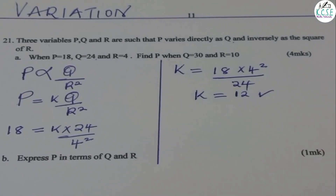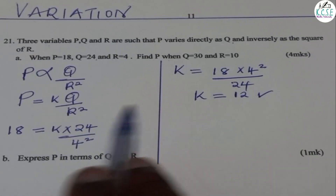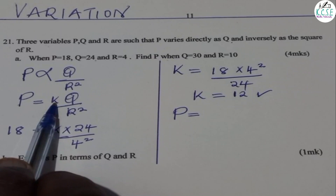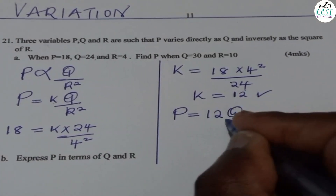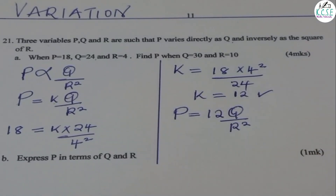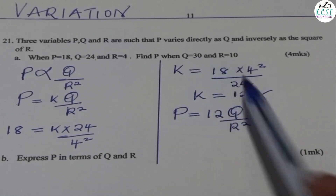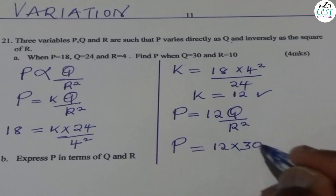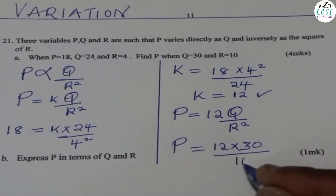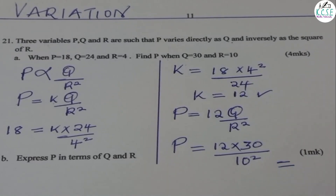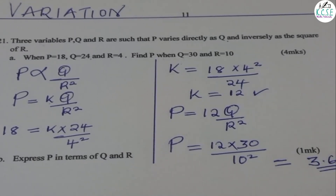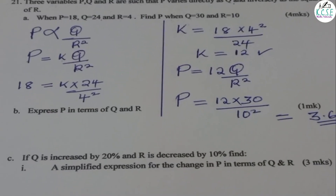Now after getting K as 12, we insert K into the equation. So the variation is P equals 12Q divided by R squared. The question asks: find P when Q equals 30 and R equals 10. So P equals 12 times 30 divided by 10 squared. Working this out gives P equals 3.6.